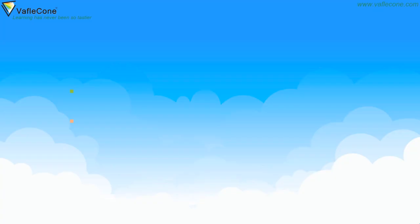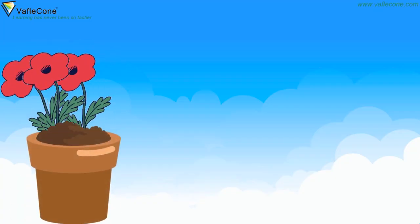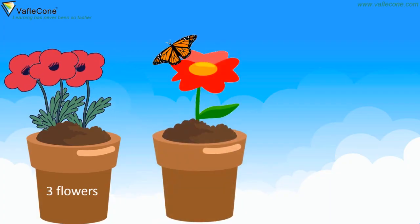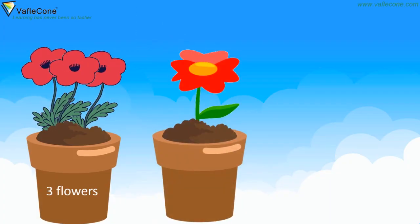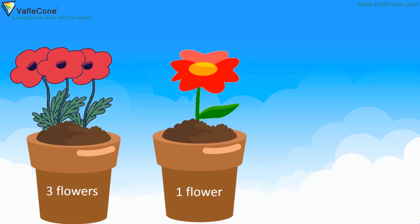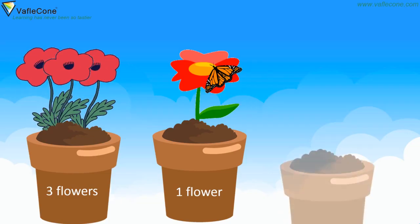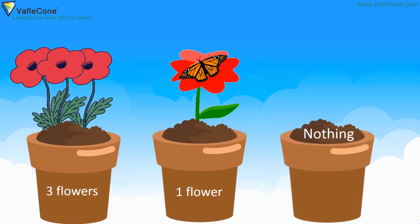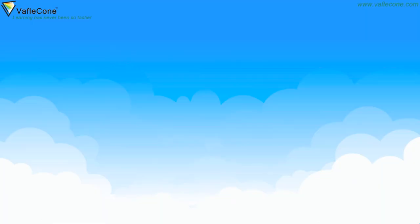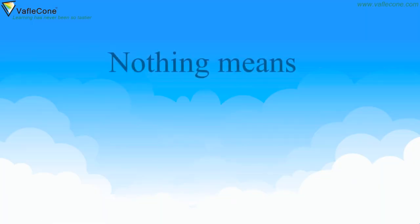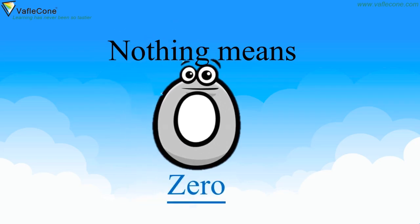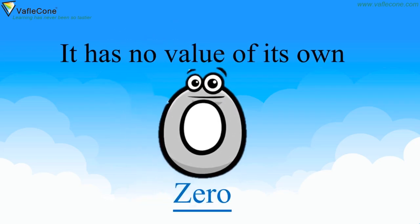Here, the first flower pot has three flowers. The second flower pot has one flower. And the third flower pot has nothing. So, nothing means zero. It has no value of its own.